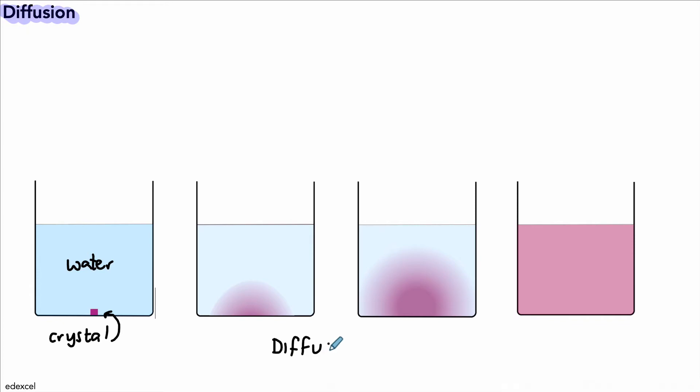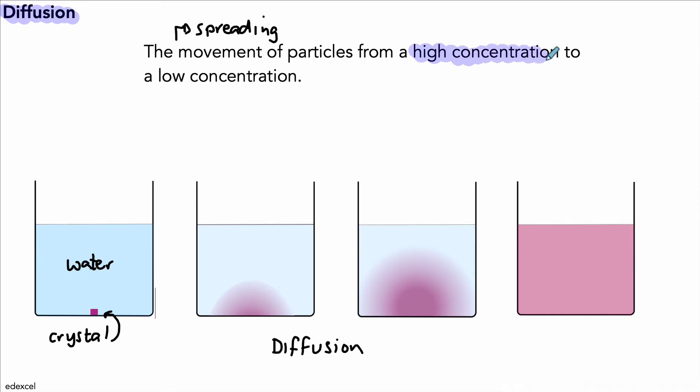What exactly is diffusion? We can define it in the following way: Diffusion is the movement of particles from a high concentration to a low concentration, where they are in high concentration to where they are in low concentration.